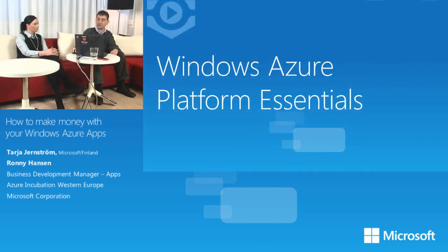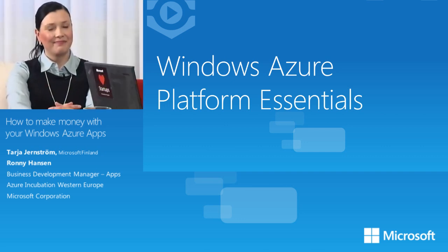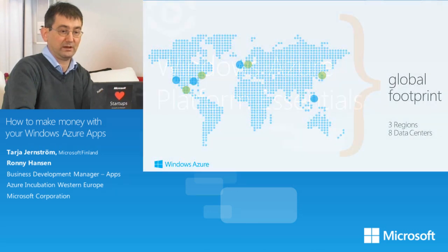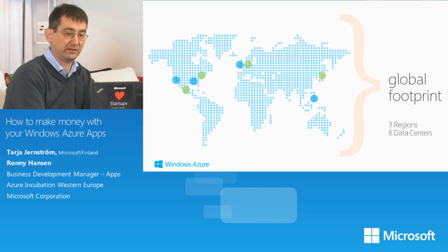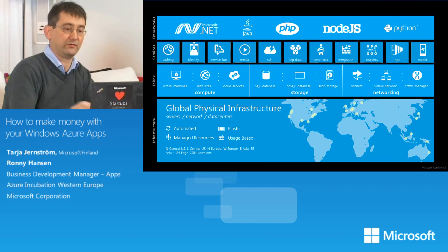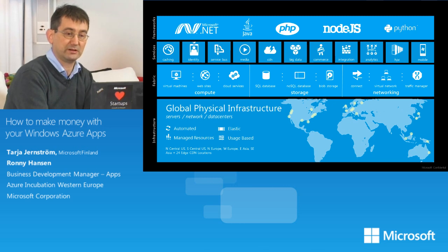Now we're going to dive into some Windows Azure platform essentials. Windows Azure is globally available in three regions: US, Europe, and Asia. We currently have eight large data centers and over 20 caching nodes around the globe. On the top of the Azure platform overview, we see the frameworks currently supported for running your code on Azure. All the APIs on Azure are REST-based, so if you don't have an SDK for your language you can do all programming through REST interfaces. The frameworks are open source from Microsoft, so you could even port one to your language.